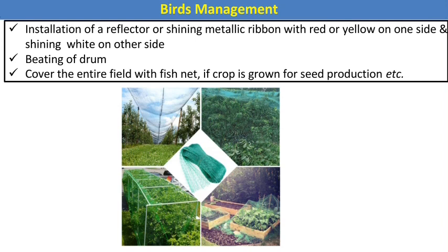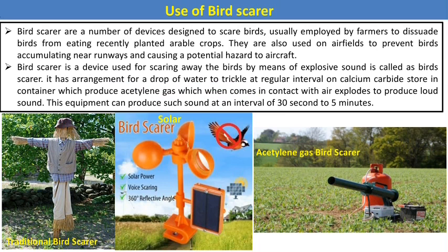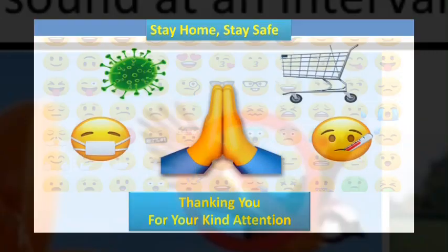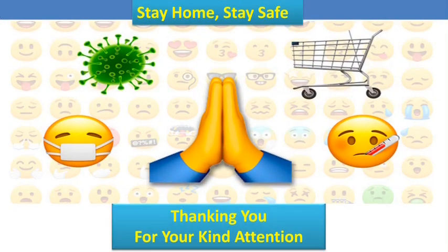For bird management: install reflective or shining metallic ribbon with red or yellow on one side and shining white on the other; beat drums to produce noise to repel birds; cover the entire field with fish net if the crop is grown for seed production; use bird scarers — traditional bird scarers are common, and solar and acetylene gas bird scarers are also available in markets. A bird scarer is a device used to scare away birds by means of expressive sound — it repels birds without killing them. This concludes the topic of rodents and bird pests, their damage and management.